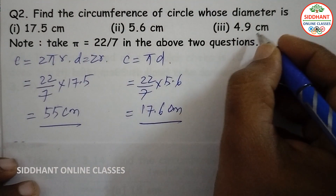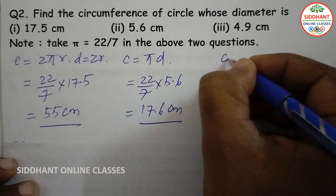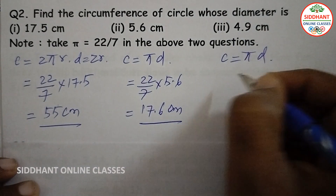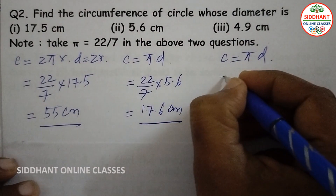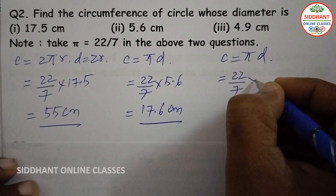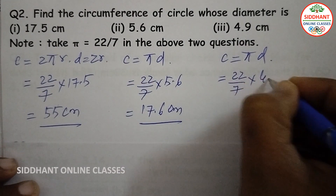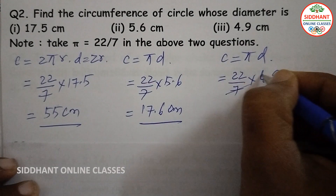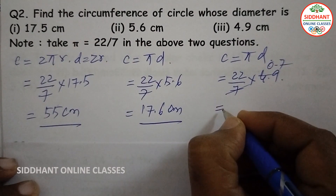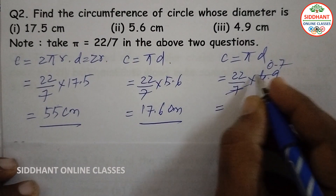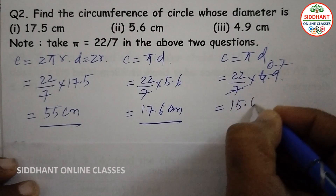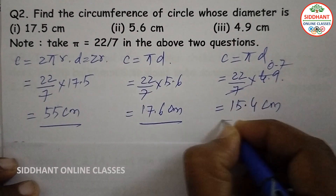Third one, diameter 4.9: circumference equals pi d, pi we are taking as 22/7, diameter given is 4.9. Here 4.9 divided by 7 gives 0.7, so 22 into 0.7 we get 15.4 centimeters.